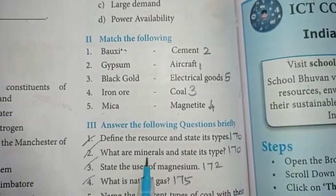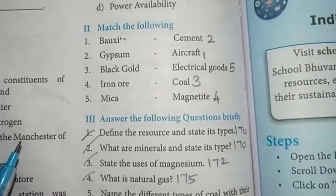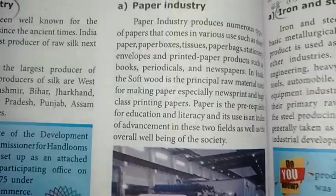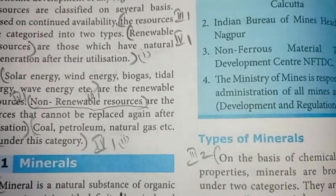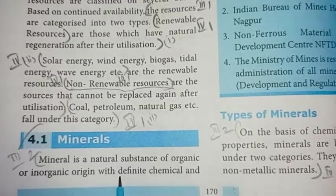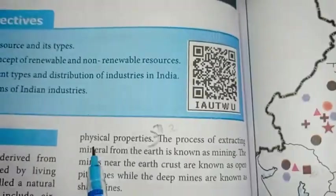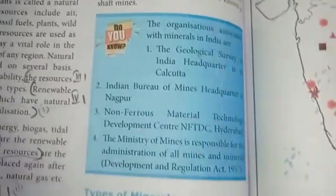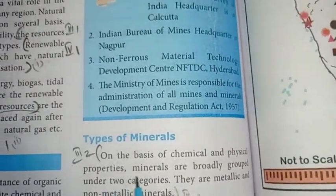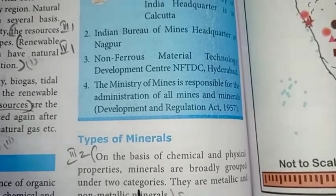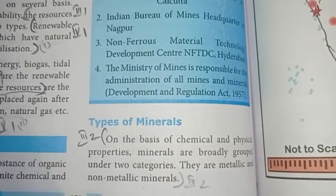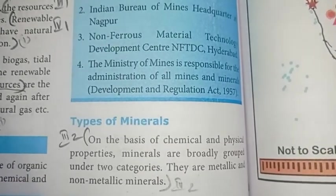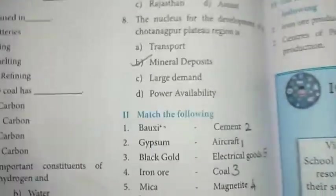Second question: what are minerals and state its types? Page number 170. A mineral is a natural substance of organic or inorganic origin with definite chemical and physical properties. On the basis of chemical and physical properties, minerals are broadly grouped under two categories: metallic and non-metallic minerals.